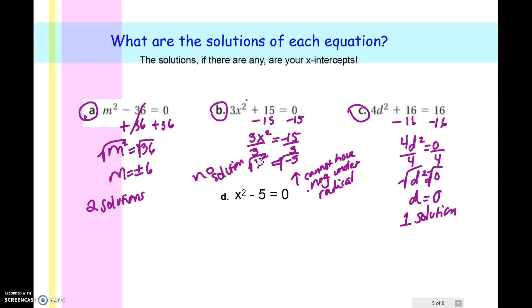In the second one, when you solved, you ended up with x squared equals negative 5. And when you take the root of that, you can't have a negative under the radical. So therefore, that would be an example of no solution, because we cannot have a negative under the radical and get a real root solution.